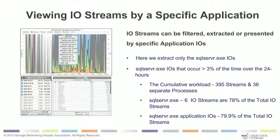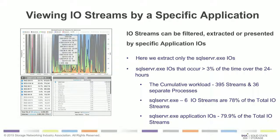You have the ability to view these IO streams not only overall but additionally by specific application. By doing that, you can extract the specific IO generated by the application even as the system does all its separate work. That allows you to look at the cumulative workload of the application itself, the different IO streams composed around it, as well as any total IO streams in comparison to how the rest of the system is working. From a software development perspective, this is very useful because it gives you understanding of all other activities in the system and how your IOs are represented.